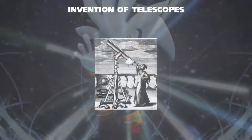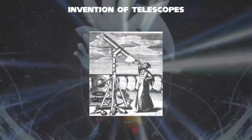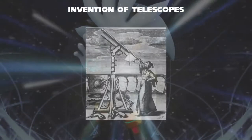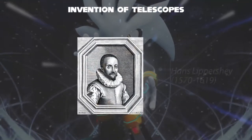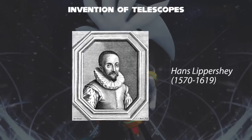The history of the telescope can be traced back to the invention of the earliest known telescope, which appeared in 1608 in the Netherlands, when a patent was submitted by Hans Lippershey, an eyeglass maker.